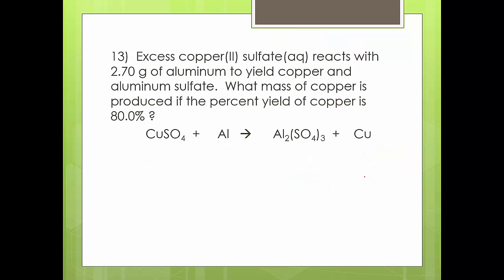Sometimes we're going to throw a twist — we like to make you think a little more. Read this problem: excess copper sulfate reacts with 2.7 grams of aluminum to yield copper and aluminum sulfate. What mass of copper is produced if the percent yield of copper is 80%? Look at the formula: actual over theoretical times 100. This time they gave us the percent yield. What's the question asking for? How much did we actually produce — so we need to find the actual yield, which means we first calculate the theoretical.